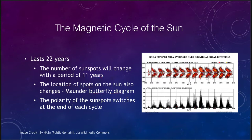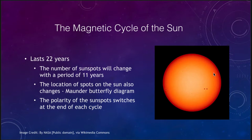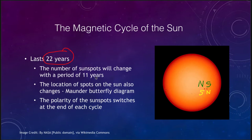Sunspots do tend to come in pairs. In one cycle you might have the north spot leading and the south spot trailing. After another cycle the south spot is leading and the north spot trailing, and after yet another cycle it returns to the same arrangement. Because of this the entire magnetic cycle lasts 22 years even though the number of sunspots comes and goes every 11 years.